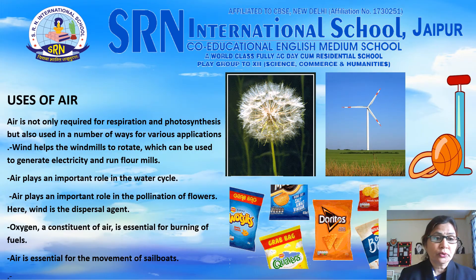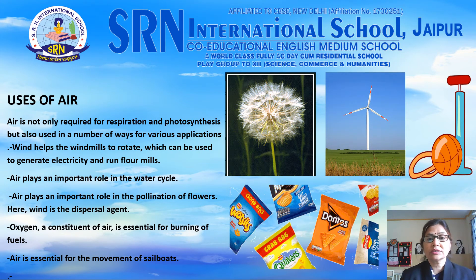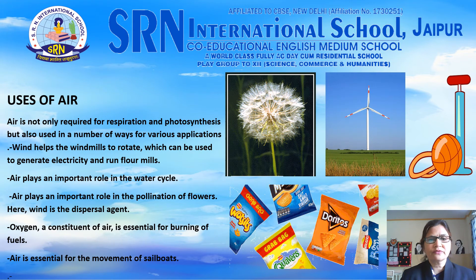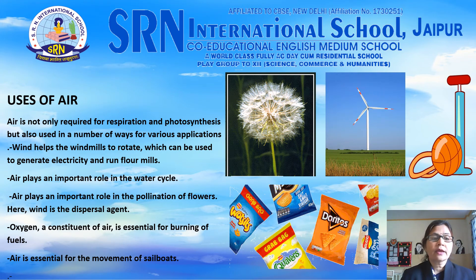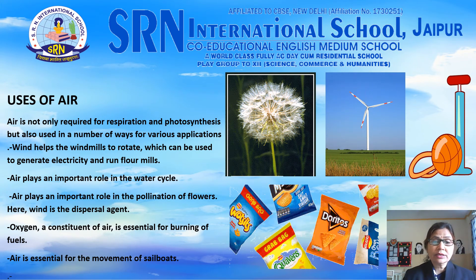Air is not only required for respiration and photosynthesis but is also used in a number of ways for various applications. Air helps in the dispersal of seeds and thereby in the multiplication and survival of plants. Wind helps windmills to rotate, which can be used to generate electricity and run flour mills. Air plays an important role in the water cycle and in the pollination of flowers, where wind acts as the dispersal agent.